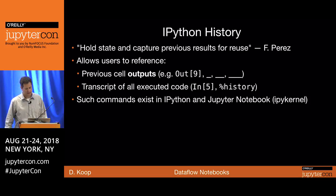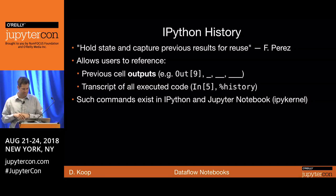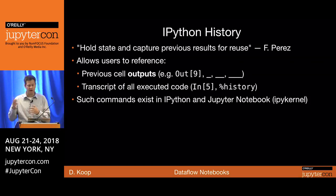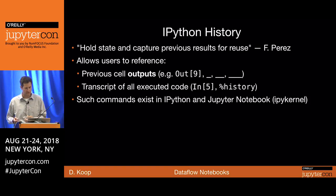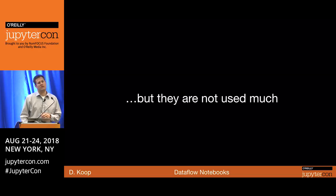IPython has shortcuts that allow referencing previous outputs and cells. You can reference a previous output using the `out` dictionary, passing in the cell number. There are underscore shortcuts where the output from the last executed cell is accessible. You can also get things on the input side by looking at the transcript of all executed code — what was cell five when it was run, even if you've deleted or moved it. There's also the magic command `history` to get a list of everything that's been run.